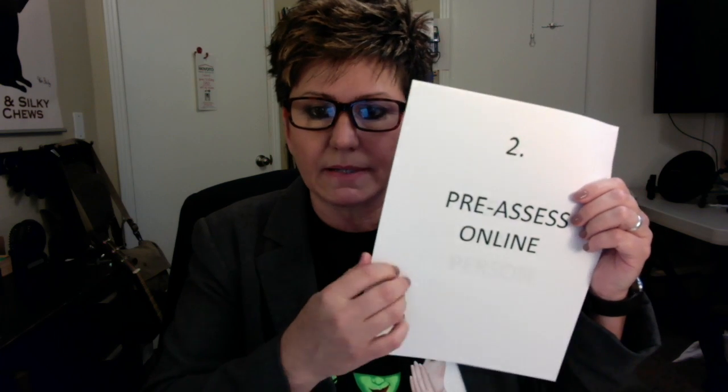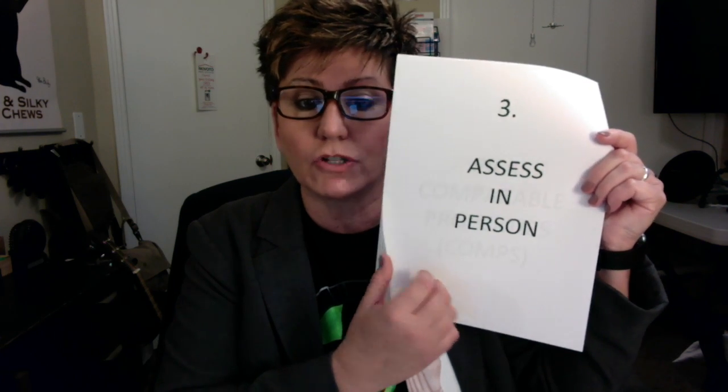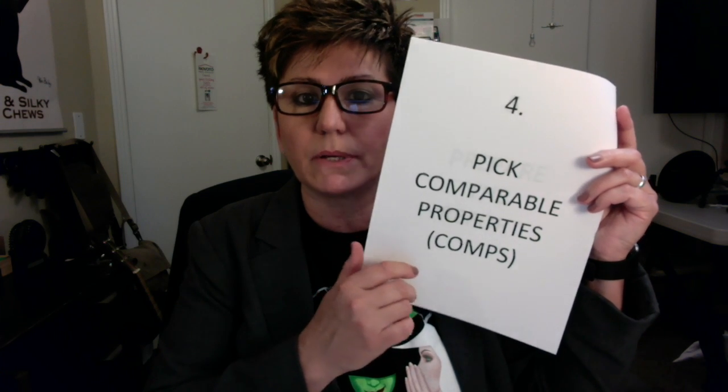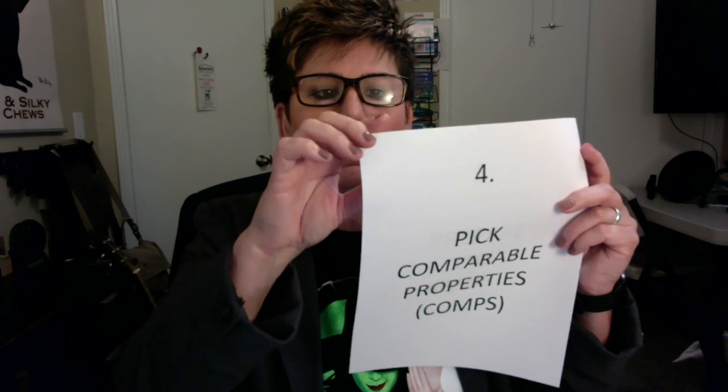These are the five things to know when preparing a Comparative Market Analysis, or CMA. I know what I'm talking about because I have this Realtor pin on and I have a blazer, so listen to me. Number one: know the neighborhood. Number two: pre-assess online. Number three: assess in person. Number four: pick comparable properties, or comps. Number five: prepare the report.